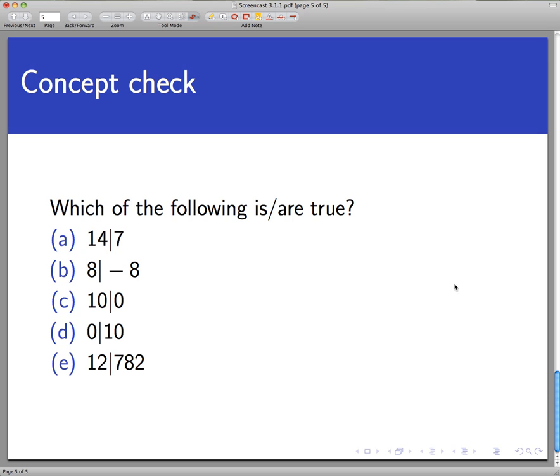So now it's time for a concept check. Which of the following five statements is or are true? Pause the video and select all that apply. Okay, now that we're back, let's just tick down the list here. This is not true. This says 14 divides 7. 14 divides 7, and that's not true. The other way around would be true. 7 divides 14. If 14 divided 7, then I would have to be able to fill in the following blank with an integer. Now I could put a fraction in this blank, namely the fraction 1 half, and make this true. But there's no integer that goes here that makes that true. So 14 does not divide 7. However, 7 does divide 14. So this is a one-way kind of operation.